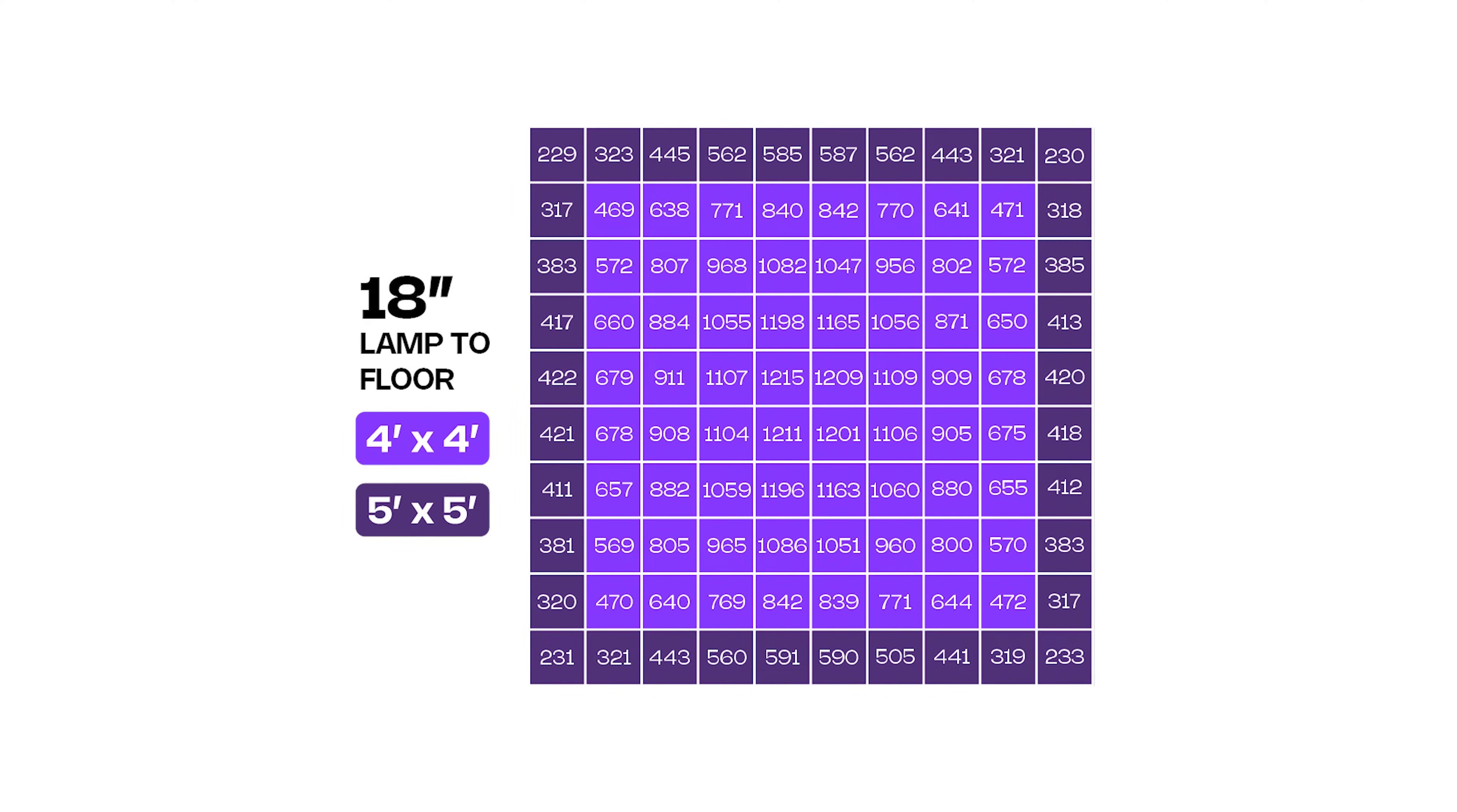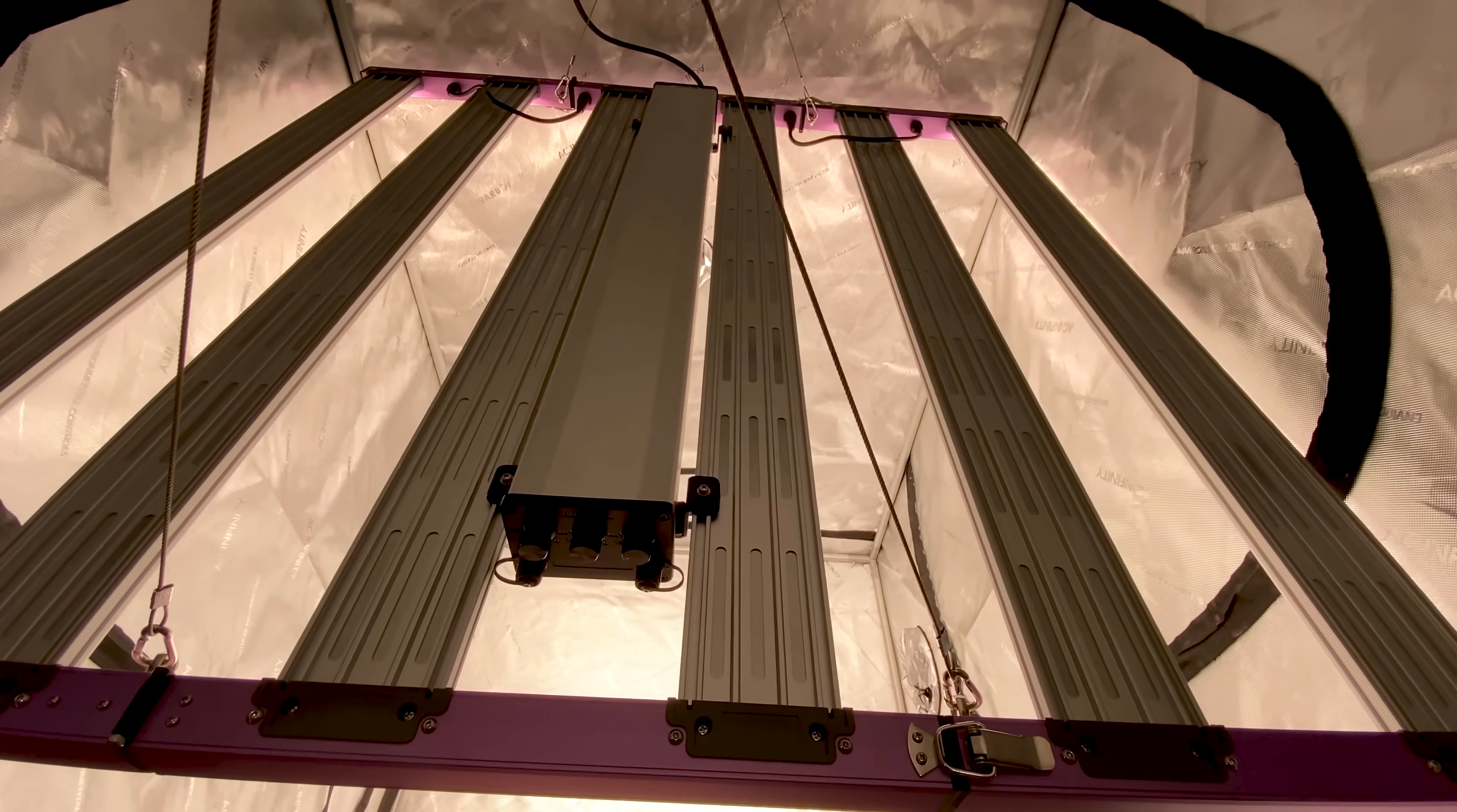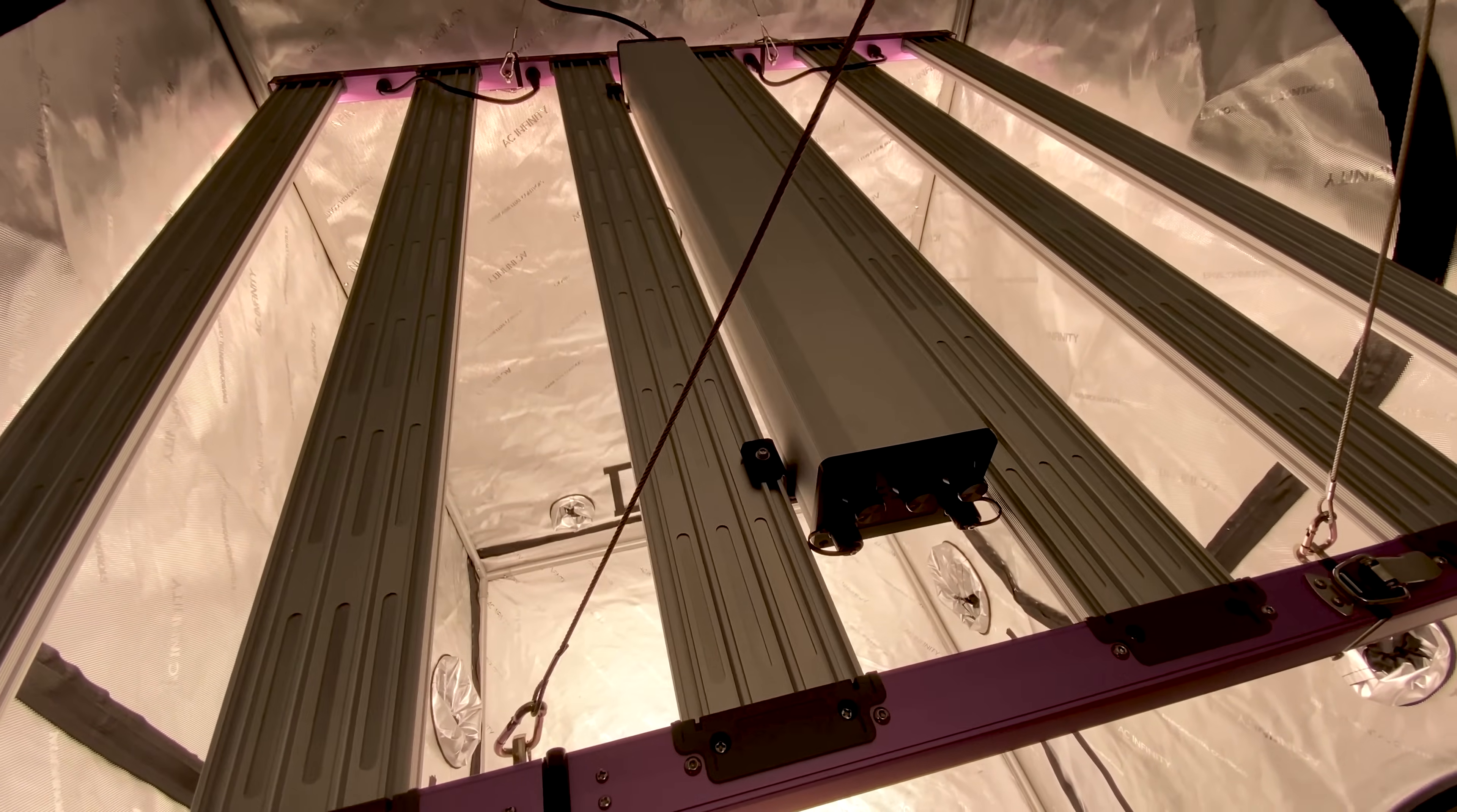Here are the PAR maps for the SL830, and overall they show strong results. The readings were taken at full intensity, but in an open space, not in a 4x4 or 5x5 grow tent. In a tent or when using multiple fixtures in a grow room, you can expect higher average readings and improved uniformity.